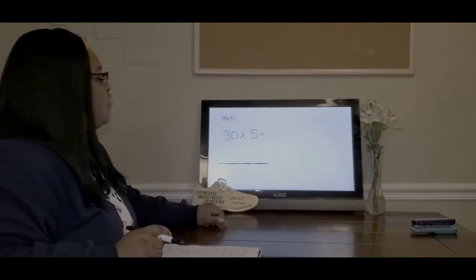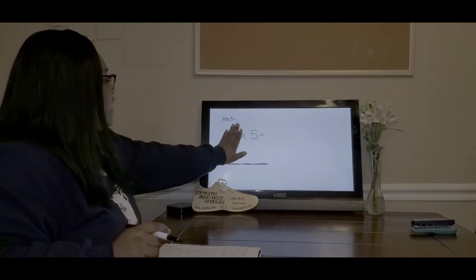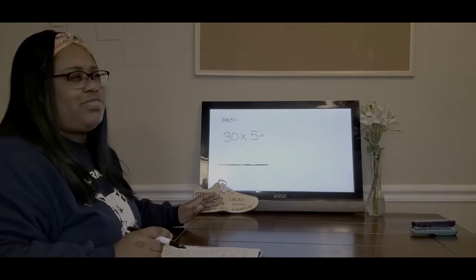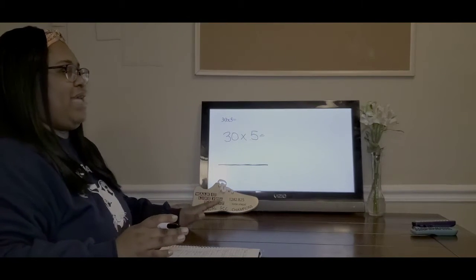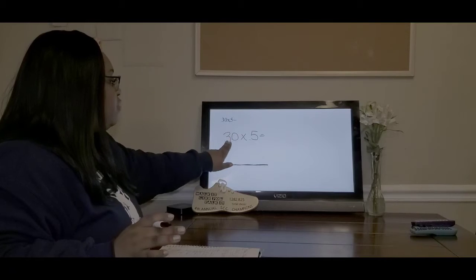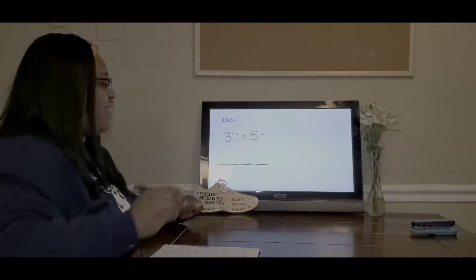I'm going to do this pretty quickly. I'm just going to cover up that 0, because I don't really know what 30 times 5 is off the top of my head. But I do know what 3 times 5 is. 3 times 5 is 15.